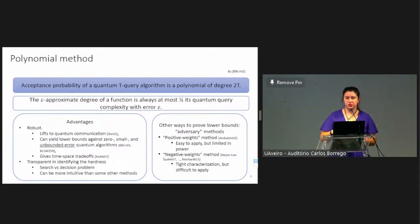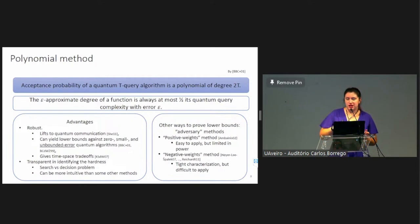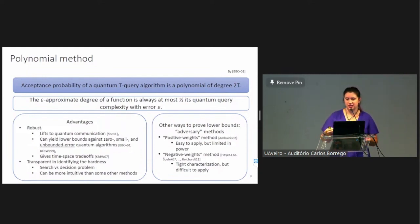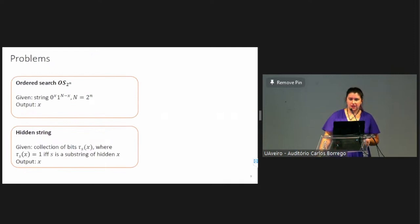Sometimes it could be more intuitive than some other methods. Just a couple of words about other methods: the most well-known are adversary methods to prove lower bounds for quantum query complexity. There is a positive rates method that is easy to apply but kind of limited in power, and there is a negative rates method that gives a tight characterization of quantum query complexity but is pretty difficult to apply.